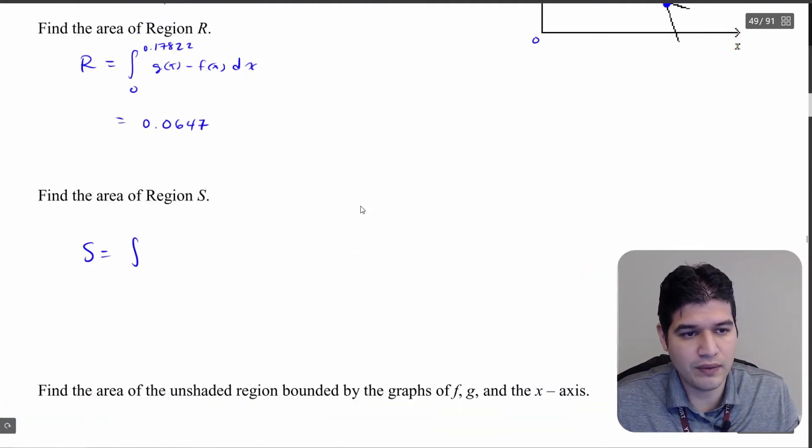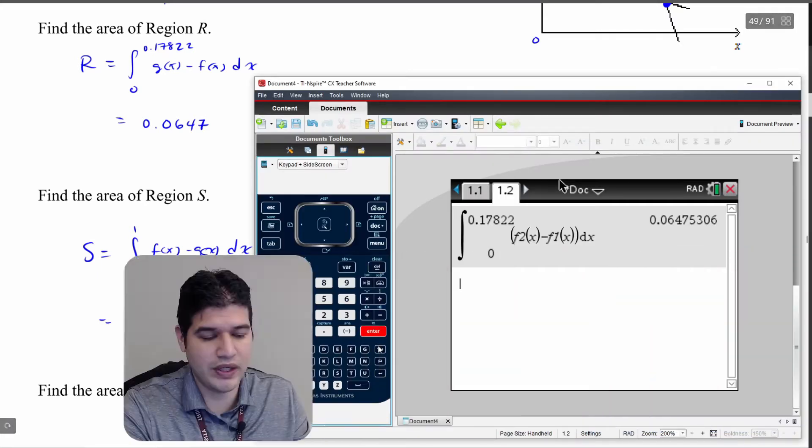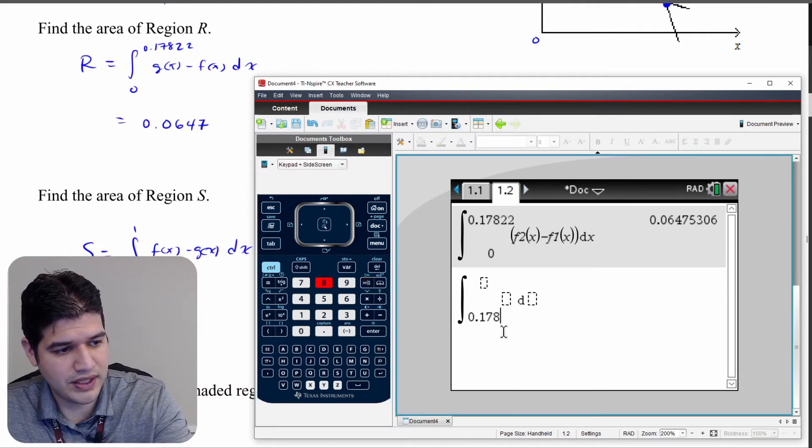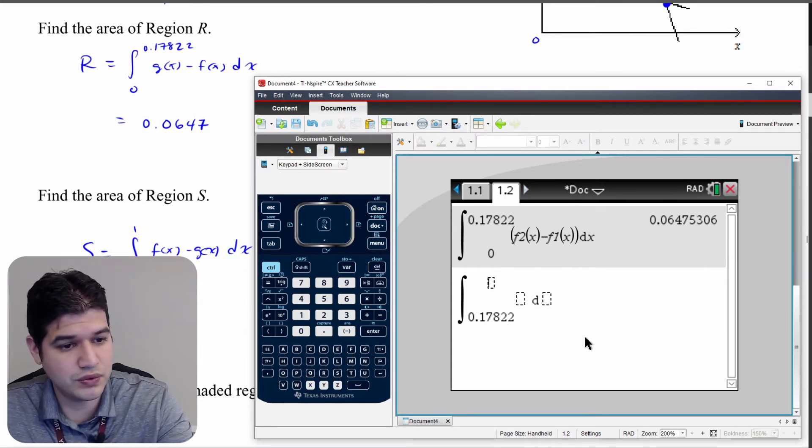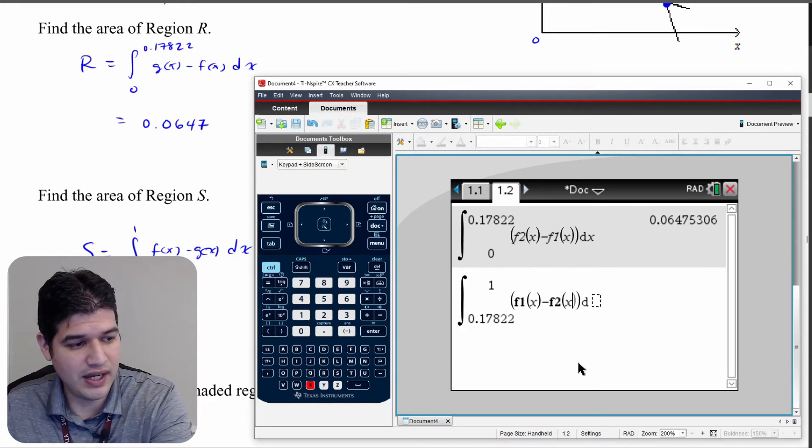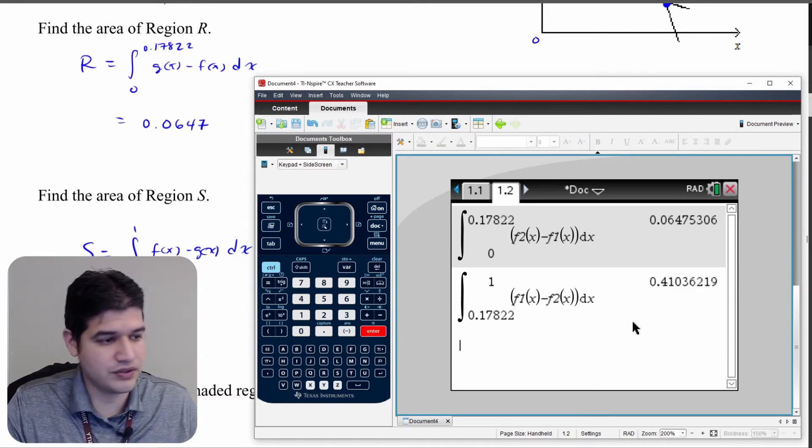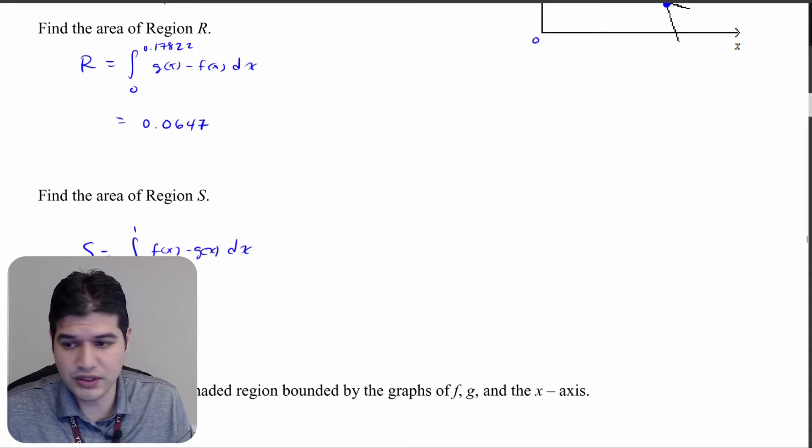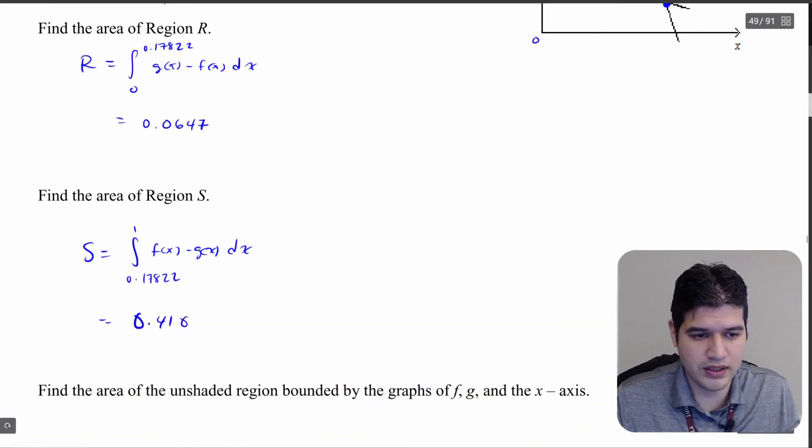So S equals the integral from 0.17822 and we're going to 1. And I'm writing down my upper minus lower, so f of x minus g of x dx. And I want to do it pretty much the exact same way that I did on the calculator here. So I'm going to find the integral from 0.17822 and I'm going over here to 1. And this time I have f1 of x minus f2 of x, and this is of course going to be dx. So let's put this in. I get 0.4104, and that is going to be my final answer here, 0.4104. And so that is going to be the area between these two curves here in region S.